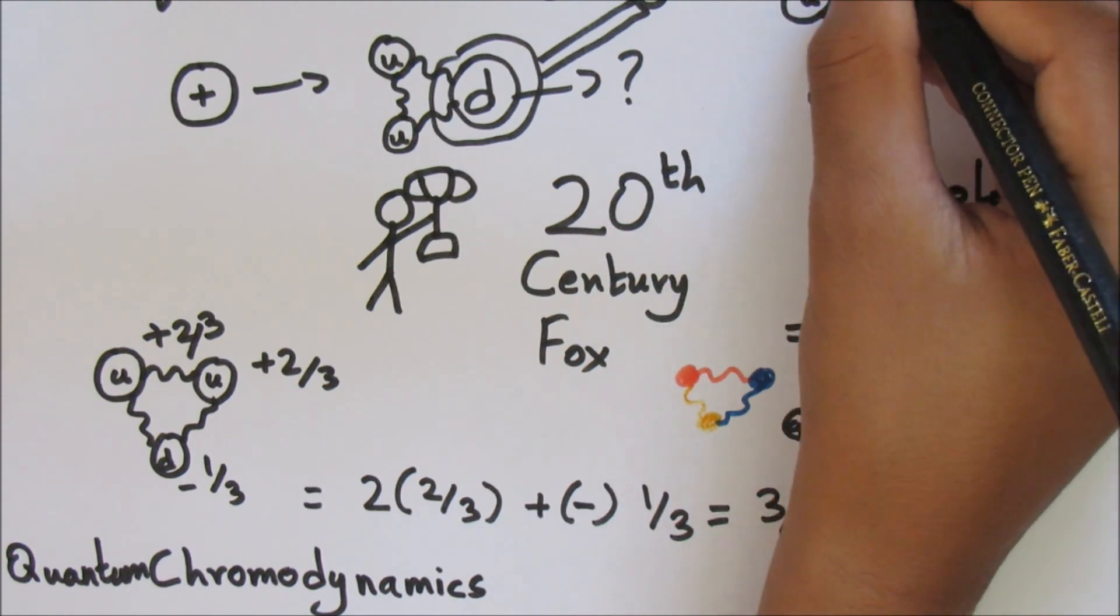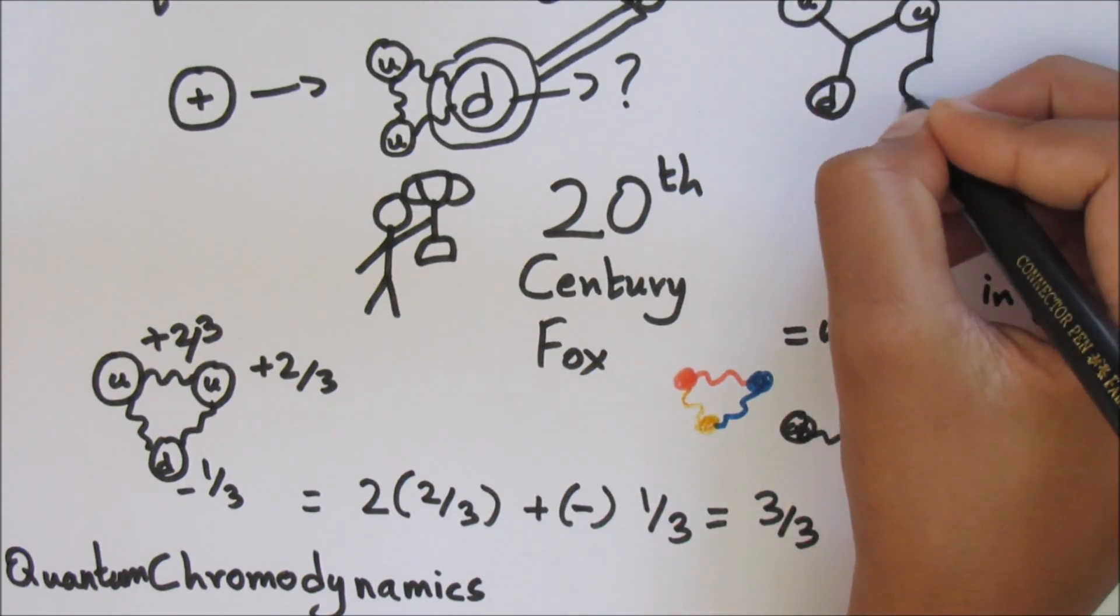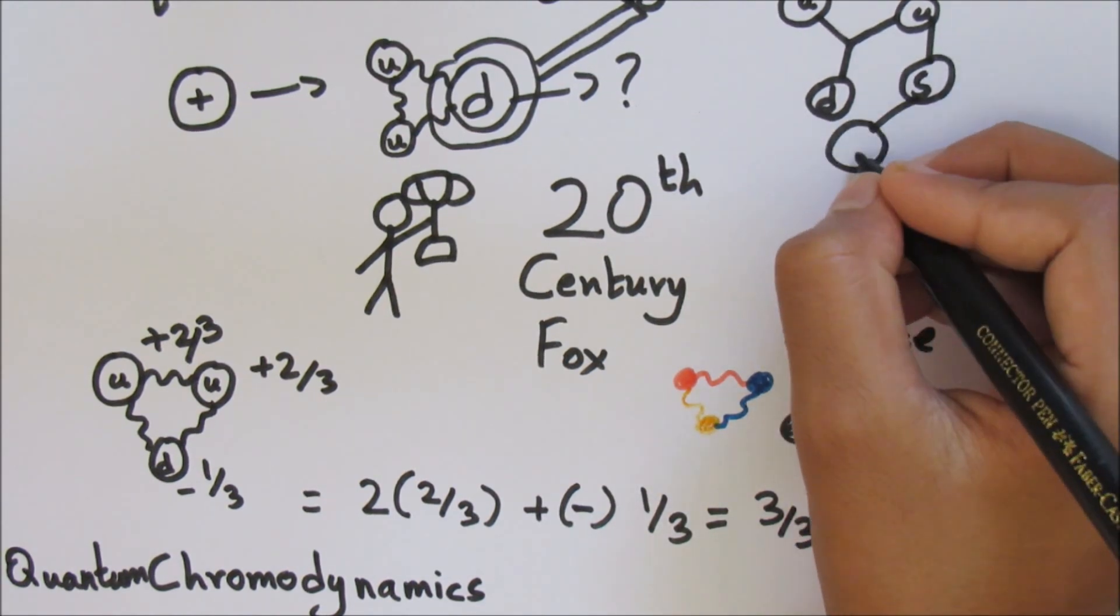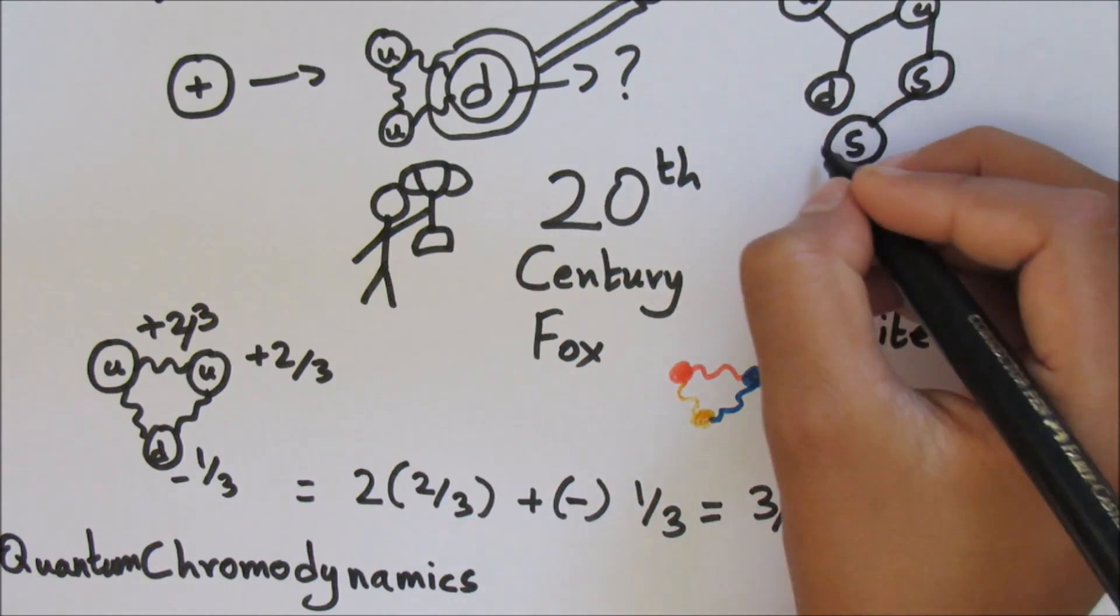So a proton could contain 13 quarks or 7, as long as its charge is positive 1 and it has 2 up quarks and 1 down quark. The same applies for neutrons.